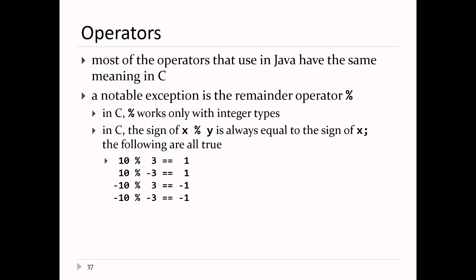The second difference is the sign behavior. In C, the sign of X remainder Y is always equal to the sign of X. So 10 remainder 3 gives 1, and 10 remainder -3 also gives 1. But -10 remainder 3 gives -1, and -10 remainder -3 also gives -1. The result always takes the sign of the first operand. That's different from Java, which has a strange convention.